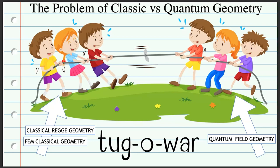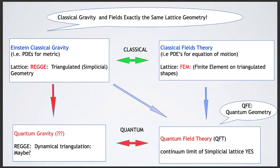Einstein's gravity, when triangulated — called simplicial — was solved by Regge in 1960. You can prove you get the Einstein equations by taking the limit of a triangulated space. Classical field theory via finite elements has also been solved. What we didn't realize is that the geometrical description of both of these is identical, so they fit together very nicely for anyone wanting to understand both gravity and field theory.